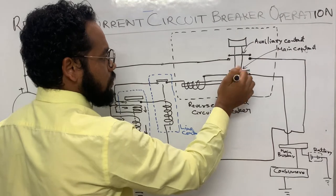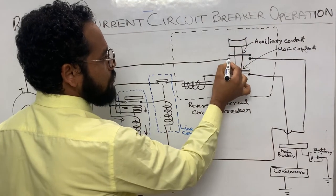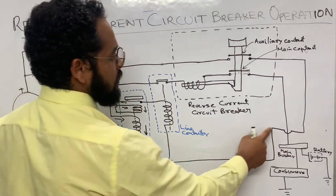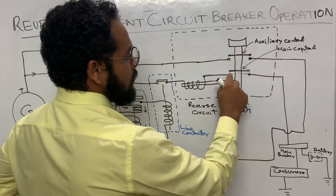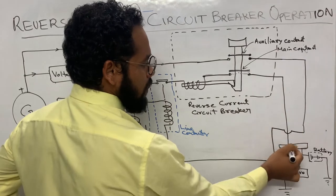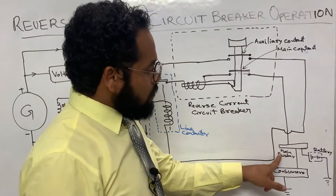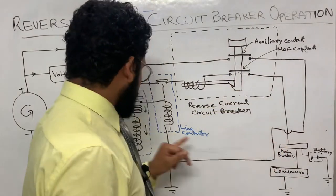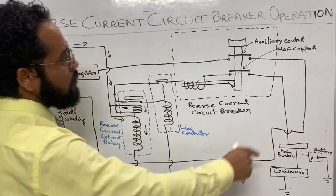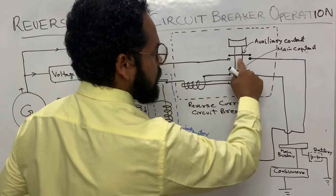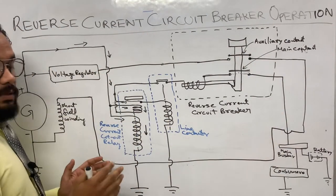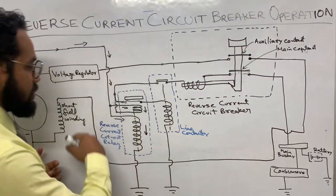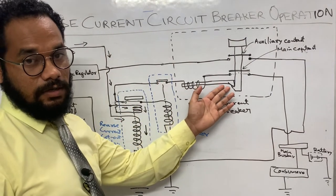When you press the reverse current circuit breaker button, both contacts close — auxiliary and main. Whatever current was waiting flows forward to the shunt winding of the generator via the auxiliary contact. The main contact, when closed, gives current to the main bus bar and batteries. So in normal operation the generator powers the main bus bar and batteries, and the shunt winding gets its supply through the auxiliary contact of the reverse current circuit breaker.